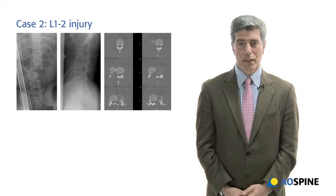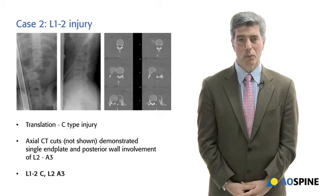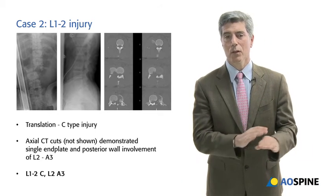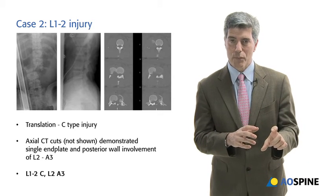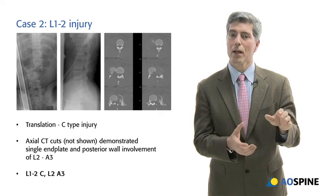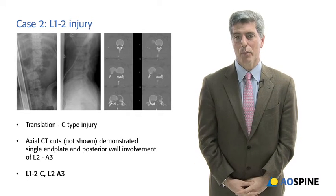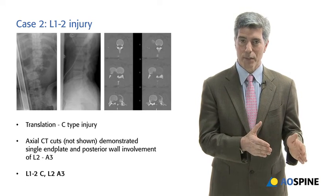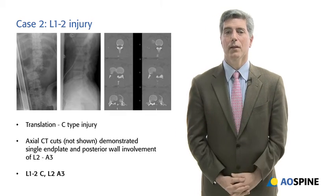In this next example, if you look at the AP view, you see significant coronal plane translation between the L1 and L2 body — that would automatically be a C injury, an extremely unstable injury. Looking more closely, the L1 vertebral body is intact, but the L3 vertebral body has a burst component involving only one endplate, and therefore that would be an A3. So you would call that an L1-2 C-type injury with L2 A3, meaning an incomplete injury.